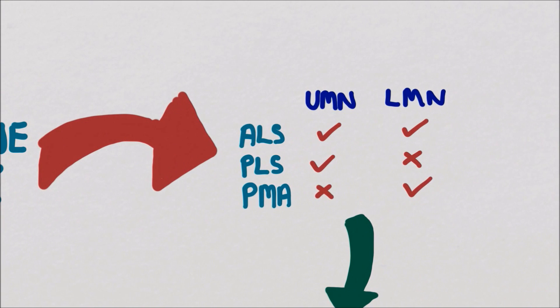Motor neurone disease has three main variants: amyotrophic lateral sclerosis, which is characterized by upper motor neuron and lower motor neurone signs; primary lateral sclerosis, which affects only upper motor neurons; and progressive muscular atrophy, which affects only lower motor neurons.